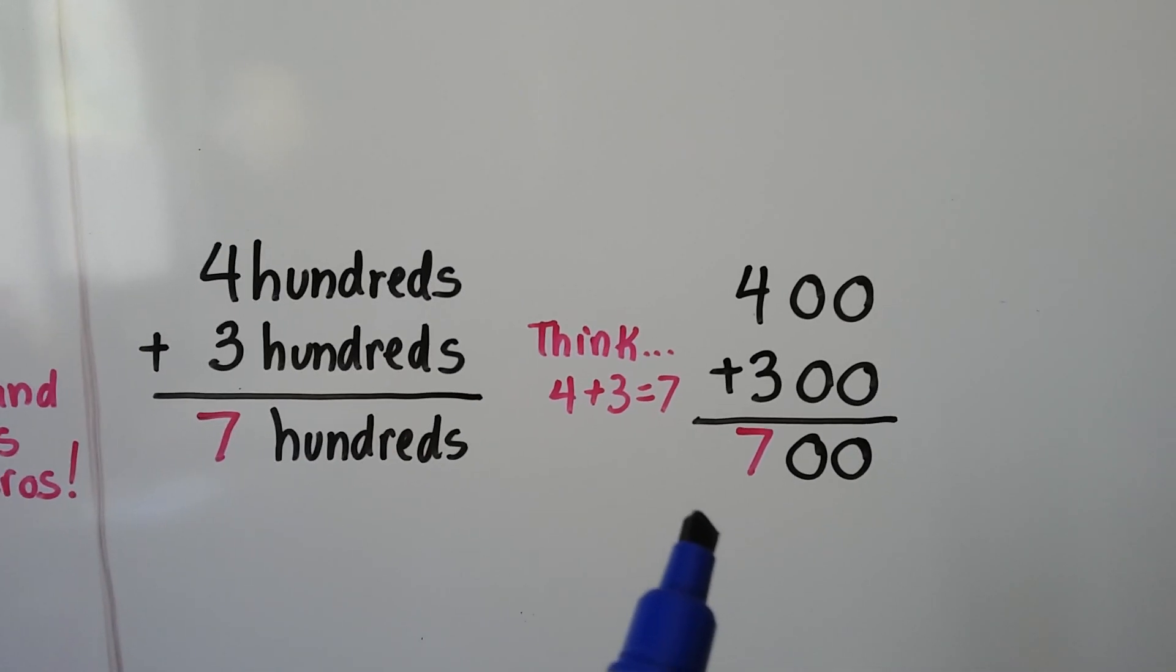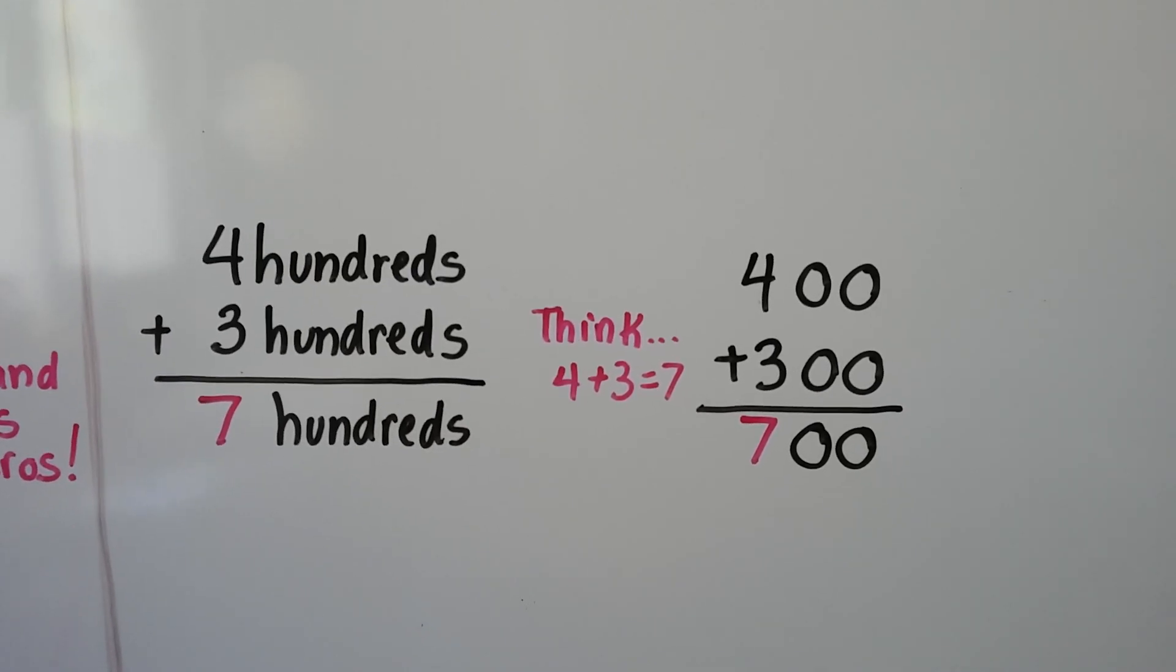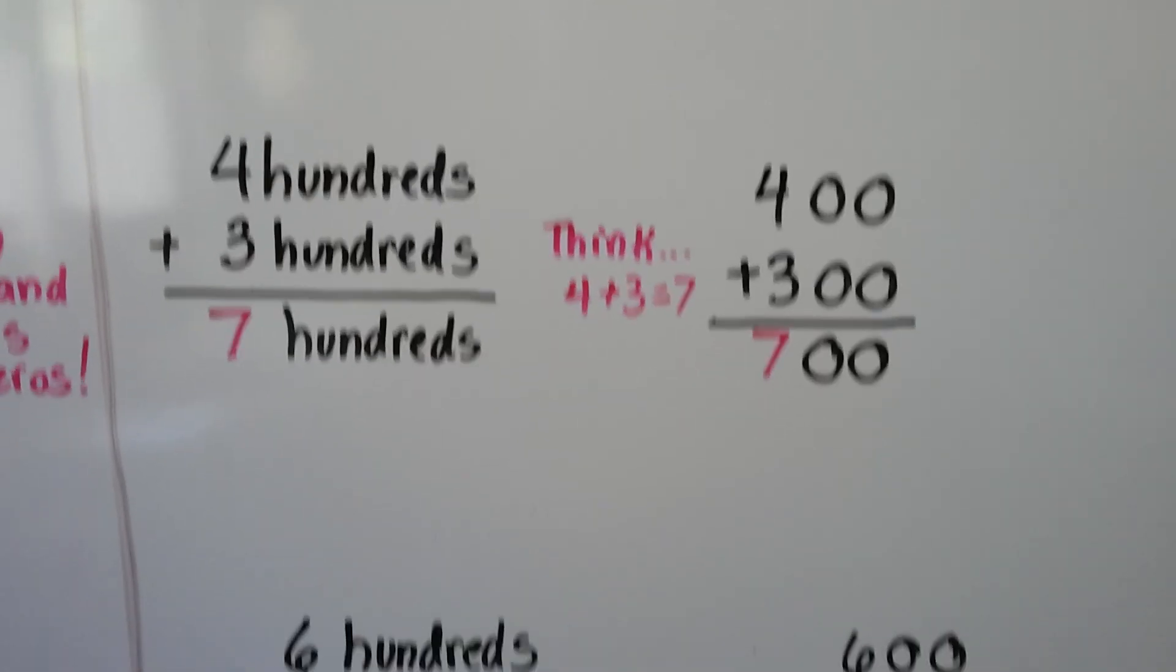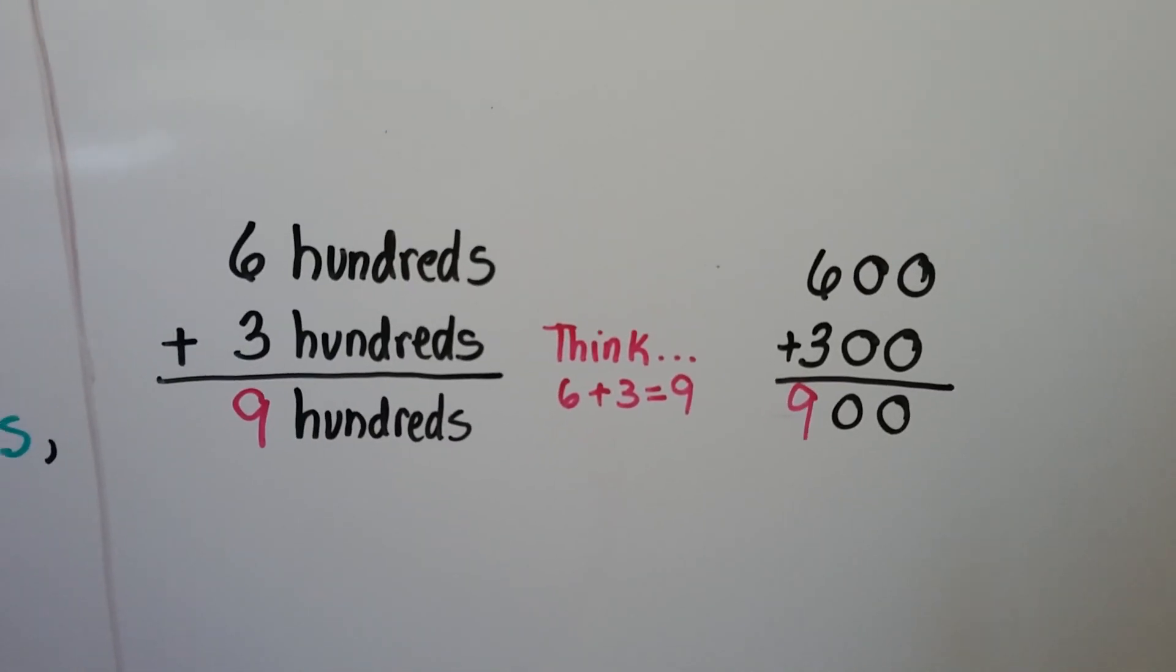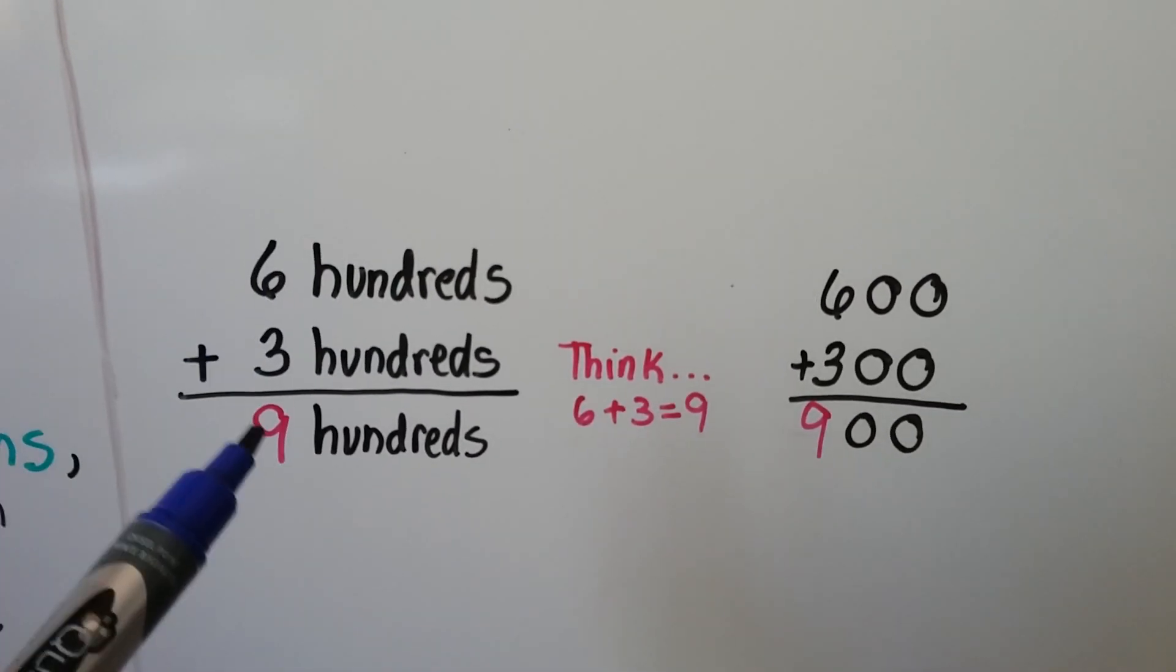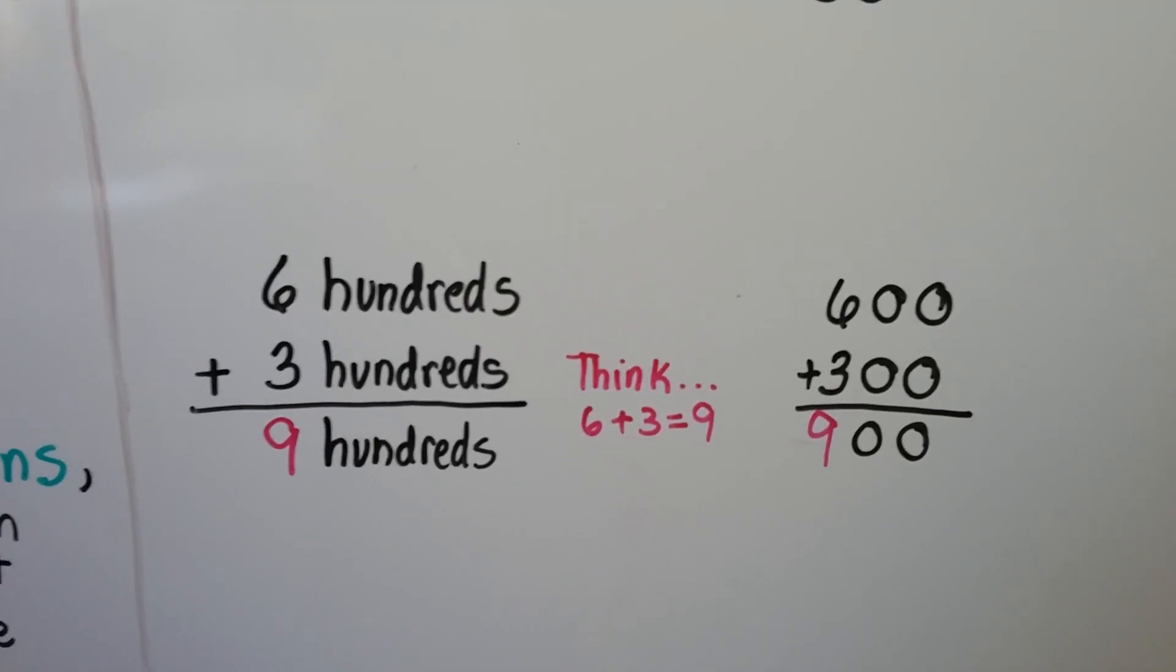It's like first grade math. 400 plus 300 equals 700. Six hundreds plus three hundreds, we just think 6 plus 3 equals 9. Six hundreds plus three hundreds equals nine hundreds.